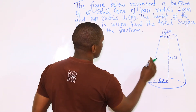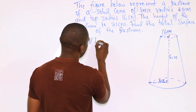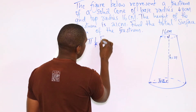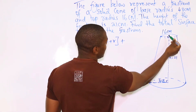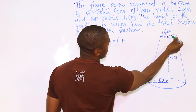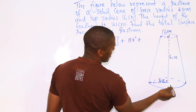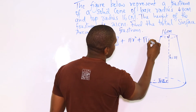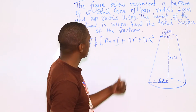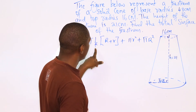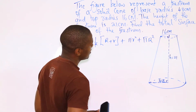To find the total surface area of the frustum, the curved surface area is π L (R + r), where L is the slant height. Then, because it is a solid, you add the top area, which is π r², plus the bottom area, which is π R². To use this formula, we need L, the slant height of this frustum.